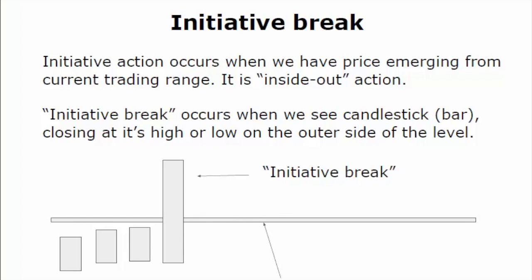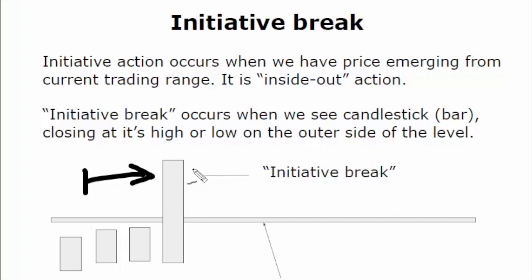A very important principle using this setup is to see no pressure from sellers in case price breaks to the upside, and no pressure from buyers in case it breaks out to the downside. Market advertises higher or lower and faces no responsive action. This is very important because when you see responsive action — for example a pin bar — it doesn't mean you have an initiative break. Once you see no responsive action, you can work with this opportunity and build an asymmetric trade with expectation of good risk-reward ratio.